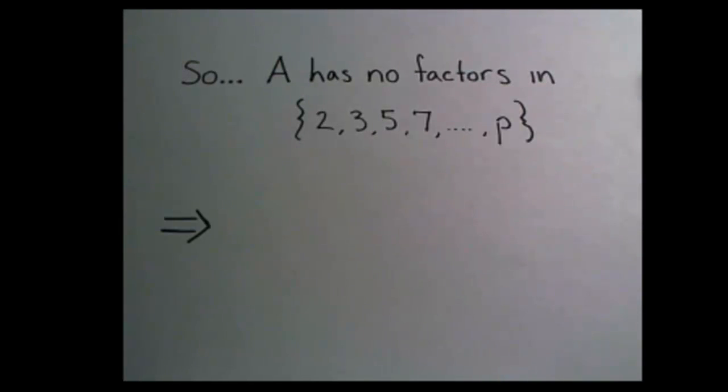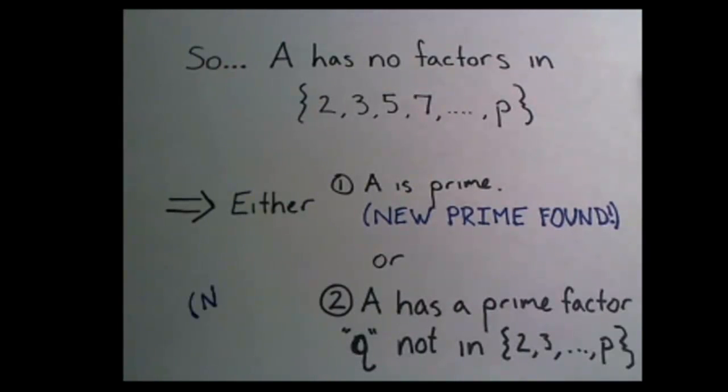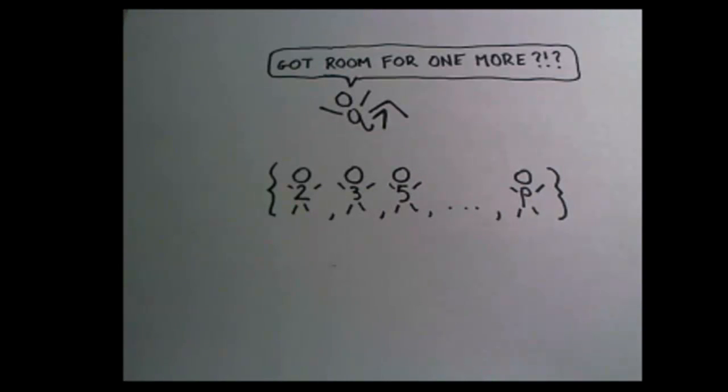Number one, either A is prime since it has no other factors other than 1 and itself. Or two, A could be composite, but its prime factors would not be in our original list. Either way, we've shown that there has to be at least one more prime number, let's call it Q, that's not in our original list.